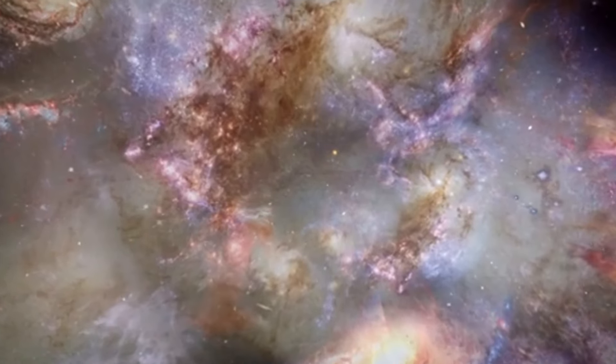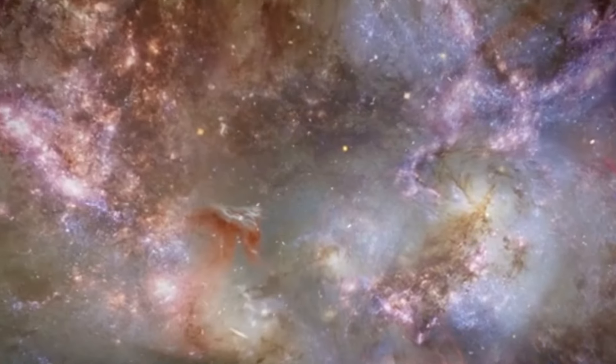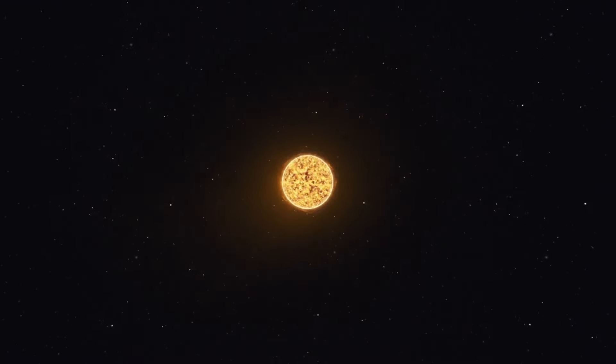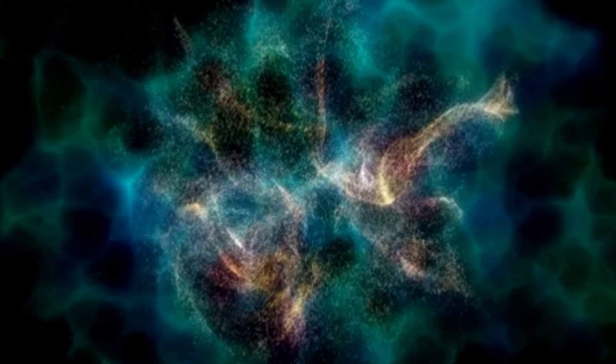Since Betelgeuse is located 650 light-years away, any supernova event happening at present would only become visible to us after 650 years due to the limitations imposed by the speed of light. Therefore, it is highly unlikely that we will witness the star's dramatic demise during our lifetime. The unique thing about Betelgeuse is that we can actually see its surface, which isn't the case for most other stars. This gives us an incredible opportunity to learn about how big stars like Betelgeuse behave as they get older, including these kinds of surprising mass ejection events.